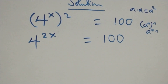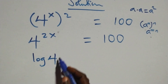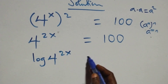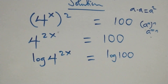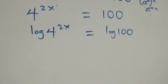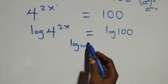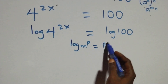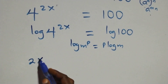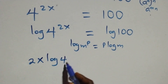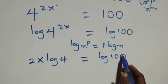The next step here: we take the log on both sides. So we have log of 4 raised to power 2x equals log of 100. Then we apply the power rule of logarithms: when we have log m raised to power p, this is the same as p log m. So we write this as 2x log 4 equals log 100.